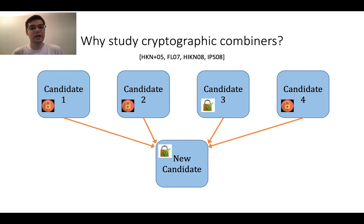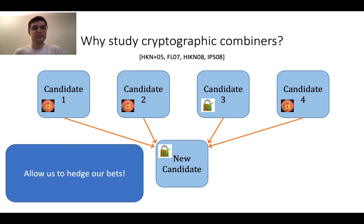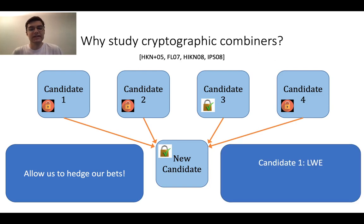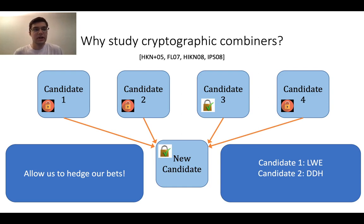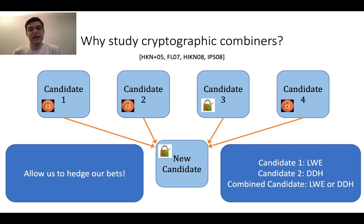Why should we study cryptographic combiners? Cryptographic combiners allow us to hedge our bets on the security of any individual candidate. In particular, in this example there are four candidates, but we only need one to be secure. Consider the following situation: we have a candidate that's secure assuming LWE and another that's secure assuming DDH. Which candidate should we use? It's not clear whether LWE or DDH is a more secure assumption. A combiner allows us to combine these candidates to get a construction that is secure as long as either LWE or DDH is secure.